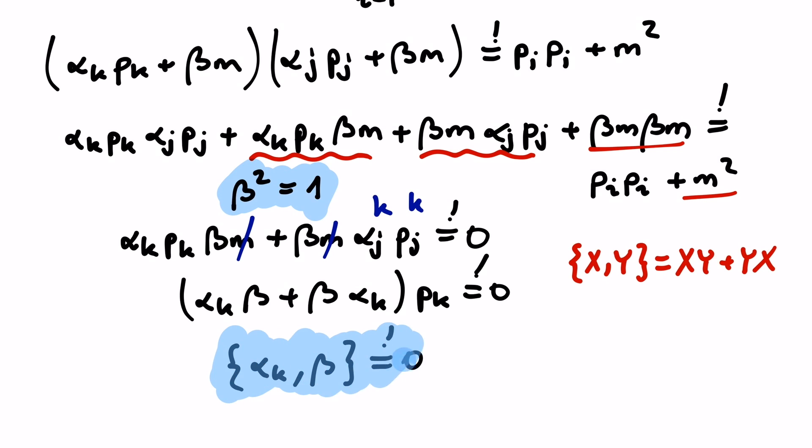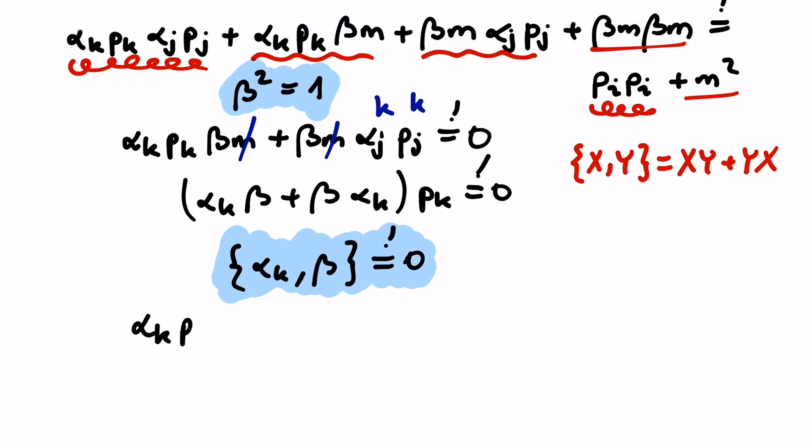Now onto the terms with two momenta. We have alpha k pk alpha j pj on the left and pi pi on the right. Here we can do a trick. We write this term again, but rename some indices, making k to j and j to k.